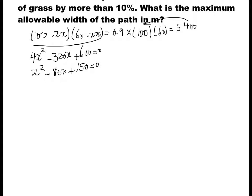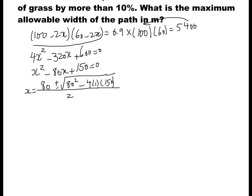Now we solve this using the quadratic formula: x equals negative b — which is 80 — plus or minus the square root of b squared — 80 squared — minus 4a times 150, divided by 2a, which is 2. This gives us 80 plus or minus 76.2, divided by 2. Going with addition gives 78.1, and going with subtraction gives 1.9.